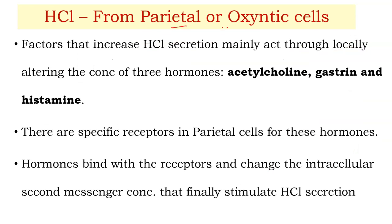Parietal cells and oxyntic cells are responsible for the secretion of HCl. The factors that increase HCl secretion act locally by altering the concentration of three hormones: acetylcholine, gastrin, and histamine. There are specific receptors for these hormones on the parietal cells. The hormones bind with receptors, change the intracellular second messenger concentration, and finally stimulate HCl secretion.